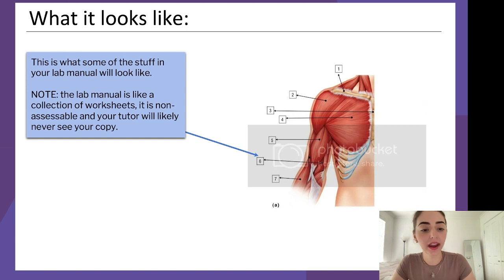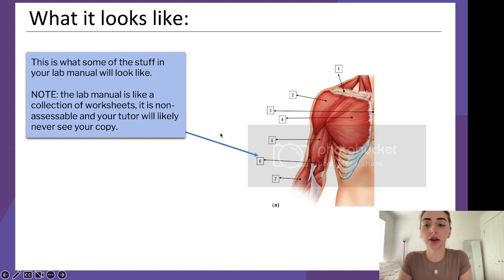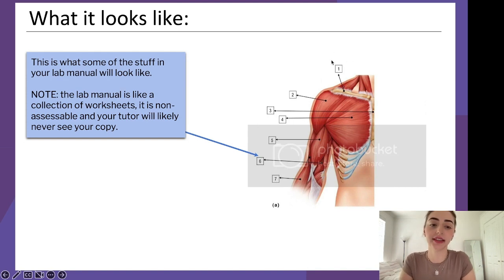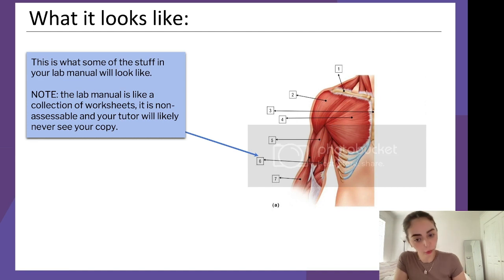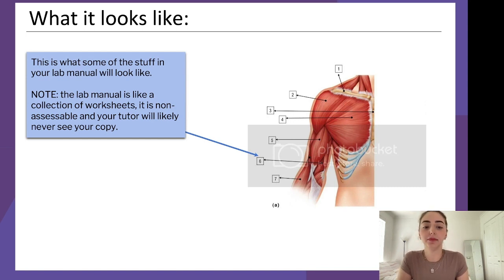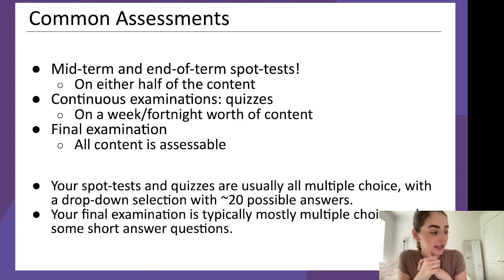You may also have a lab manual, which most people do. It's essentially a collection of worksheets — for example, if you're doing the muscular system, you walk around with a pen and write down each part of the body as you examine it in the lab. Note that the lab manual is just for you; it's not collected and your tutor will likely never see your copy. That said, I'd recommend filling it out because it definitely helps.